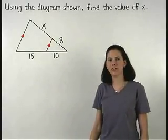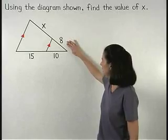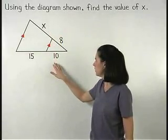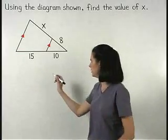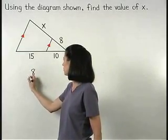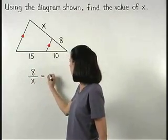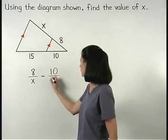Therefore, we can set up the proportion 8 is to x as 10 is to 15. So we write 8 over x equals 10 over 15.